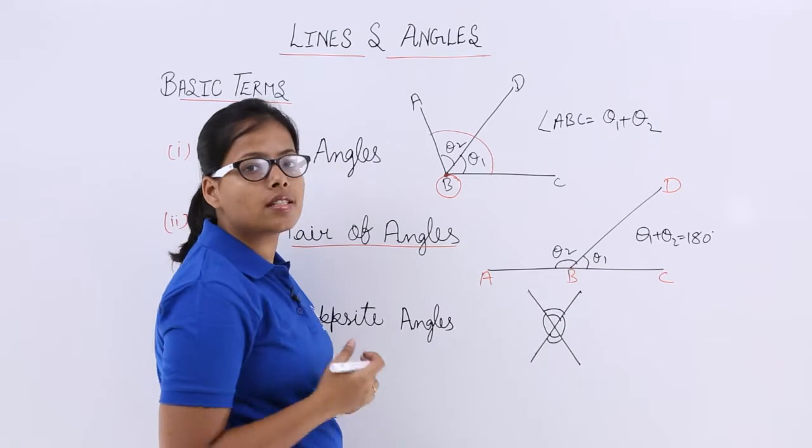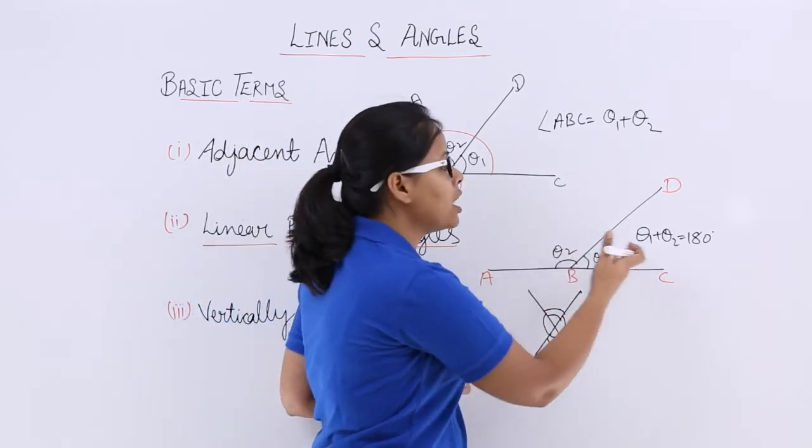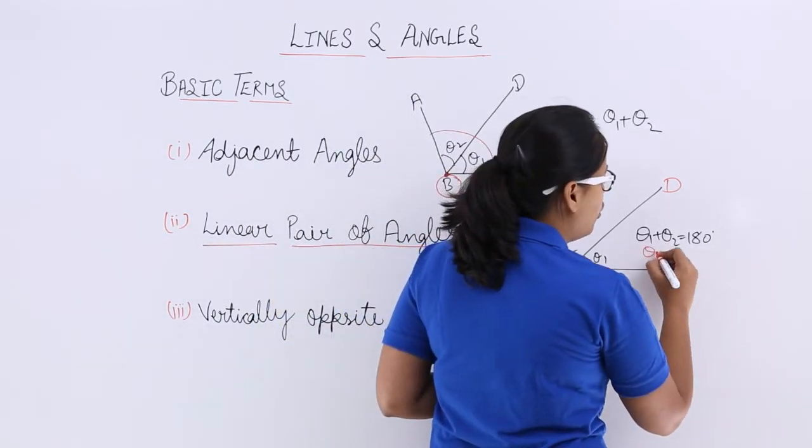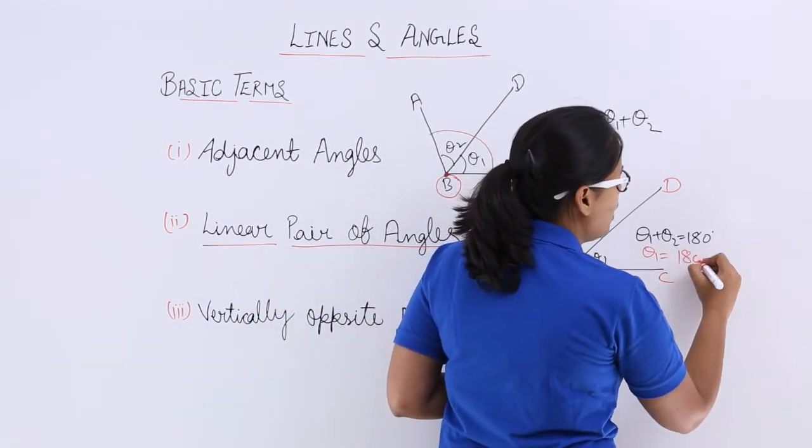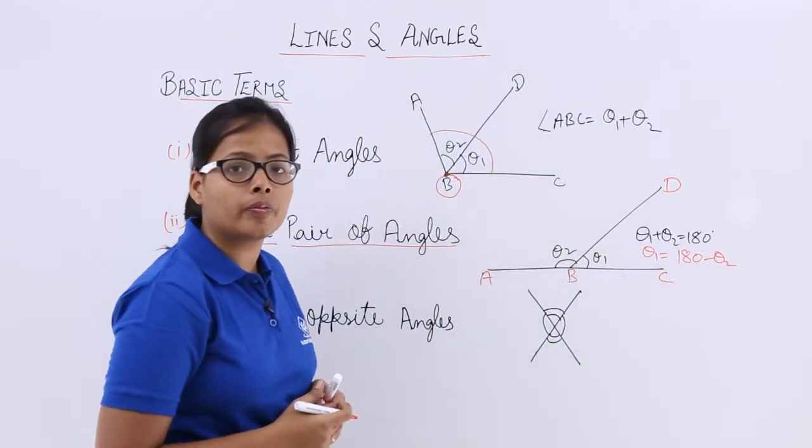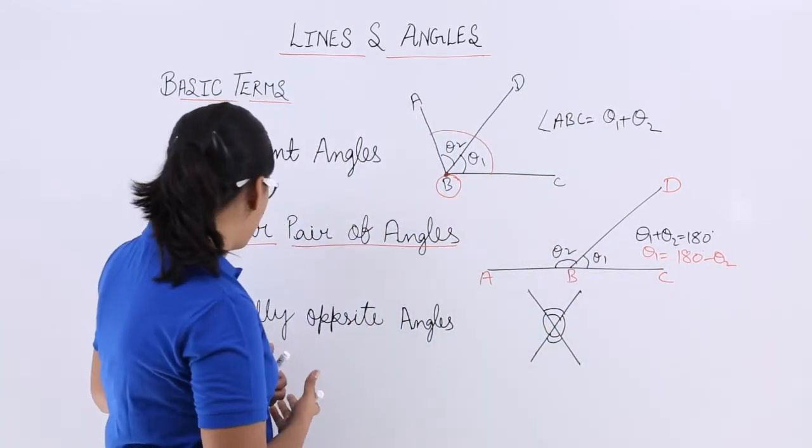So here in this case summation of theta1 plus theta2 will be equal to 180 degrees. So if you need to find value for theta1, what you can say? You can write it as 180 minus theta2. So now let's see what is another term?